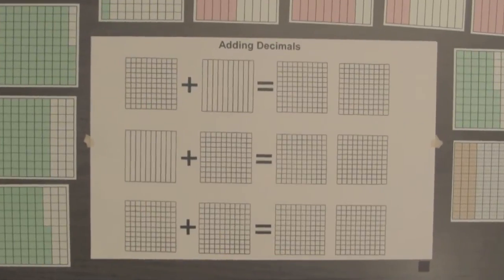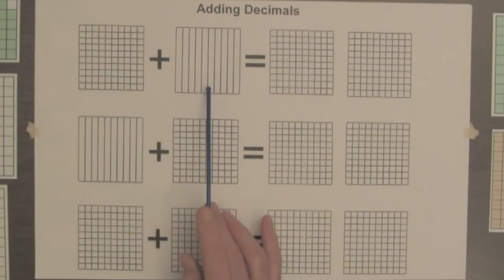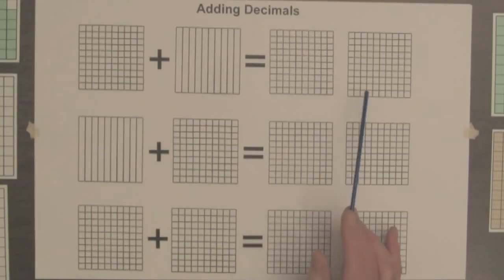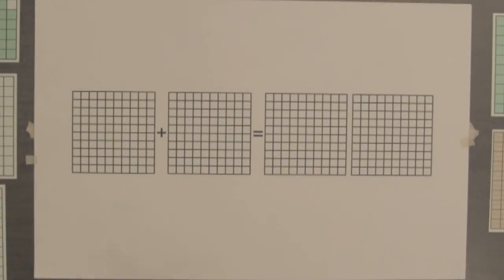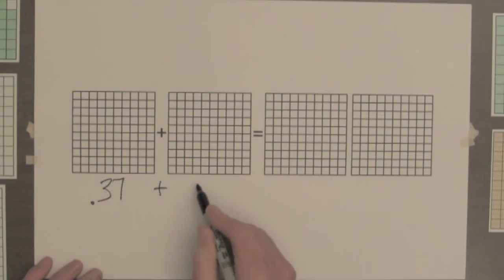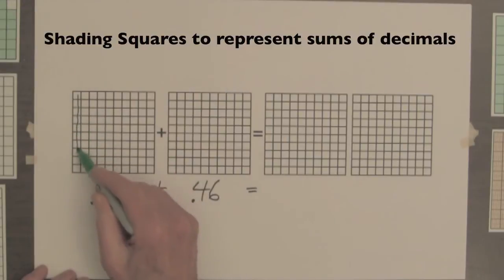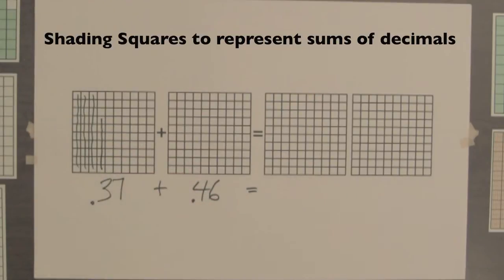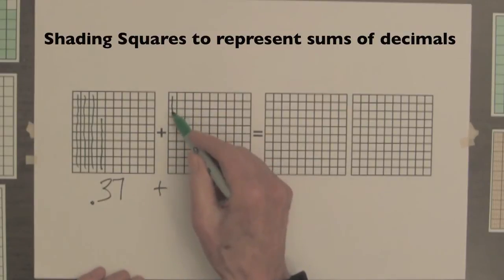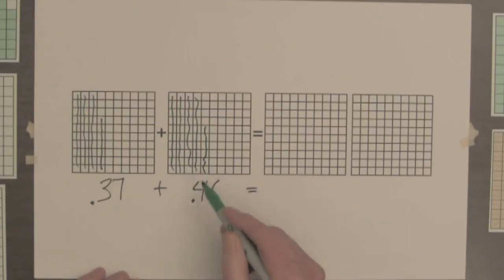Students can illustrate sums of decimals by shading blank decimal squares. They can shade squares for hundredths and tenths decimals, shade a square for the sum — or it might take two squares — or shade squares for tenths and hundredths, or shade squares for two hundredths decimals. Let's use a larger copy of these squares to illustrate thirty-seven hundredths plus forty-six hundredths. The square for thirty-seven hundredths will have three full columns shaded and seven hundredths squares in the next column. In the square for forty-six hundredths we'll have four full columns shaded and six hundredths squares in the next column.